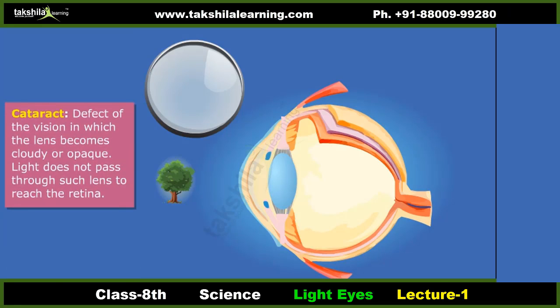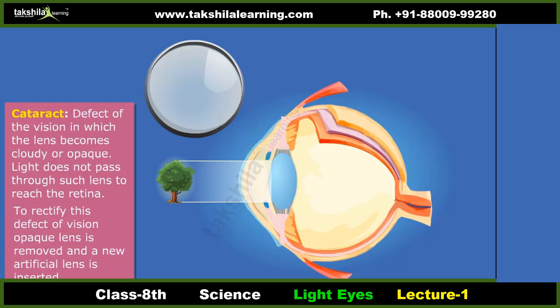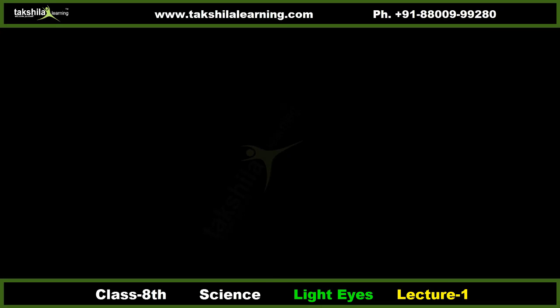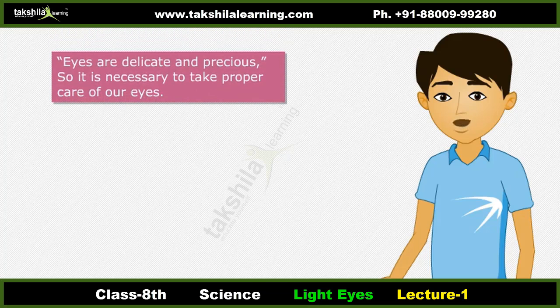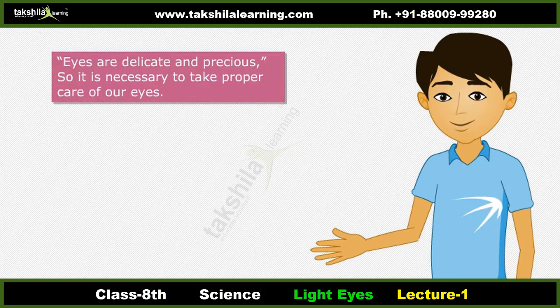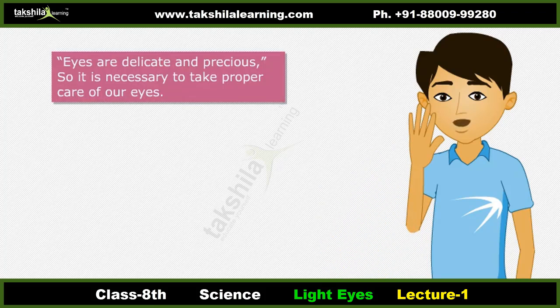Cataract is a defect of vision in which the lens becomes cloudy or opaque, so light does not pass through to reach the retina. To rectify this defect, the opaque lens is removed and a new artificial lens is inserted. Eyes are delicate and precious, so it is necessary to take proper care of them.